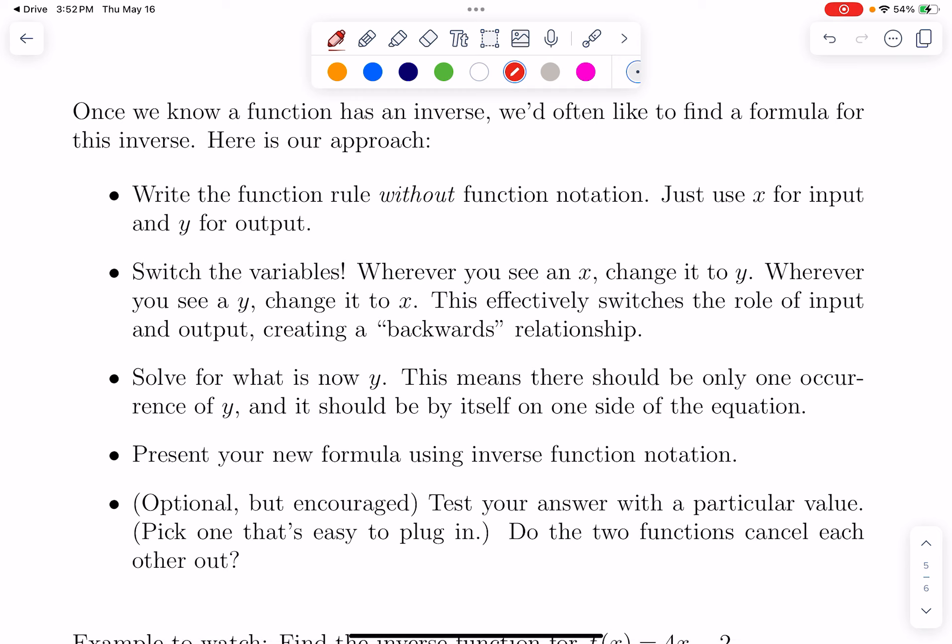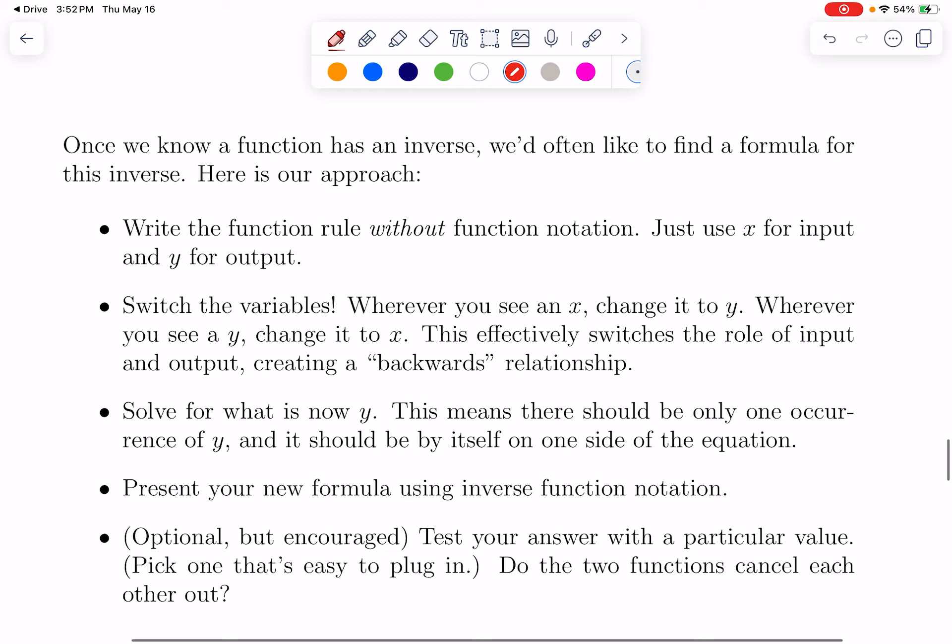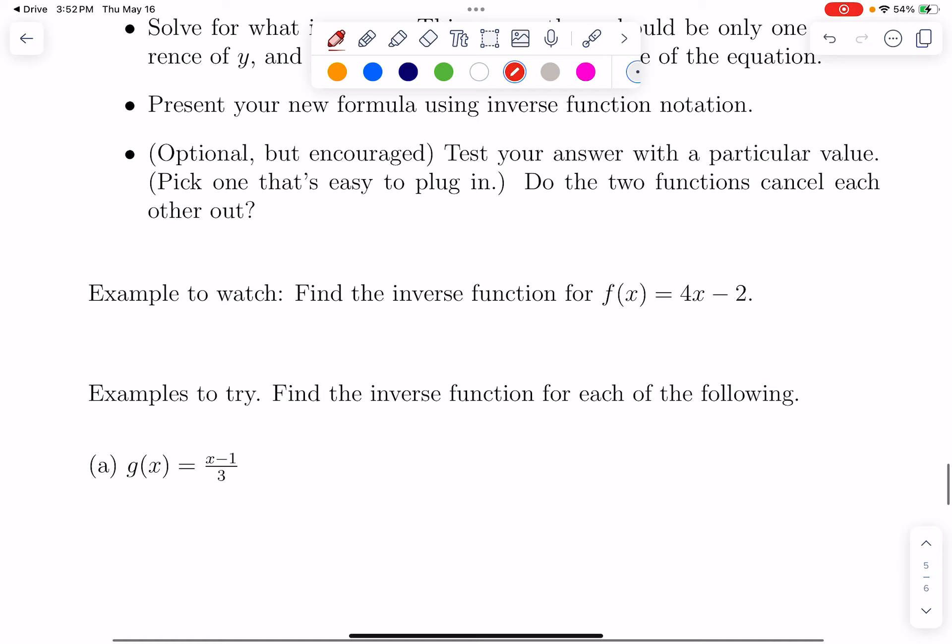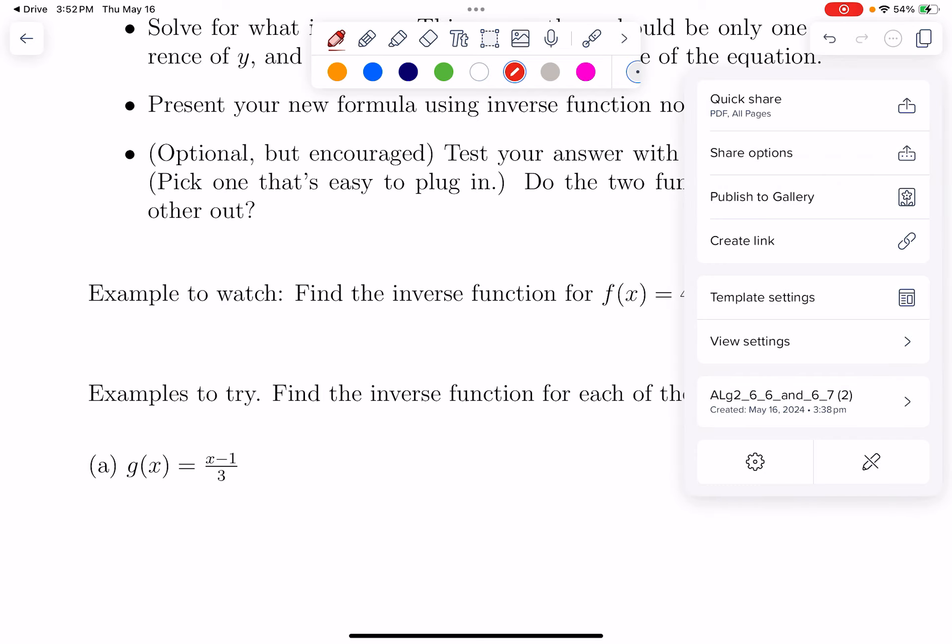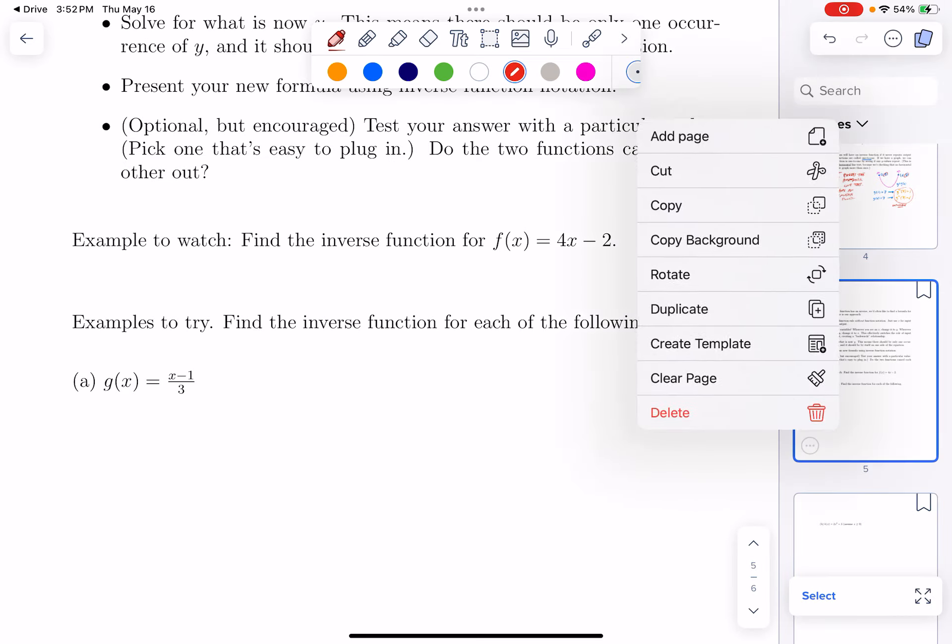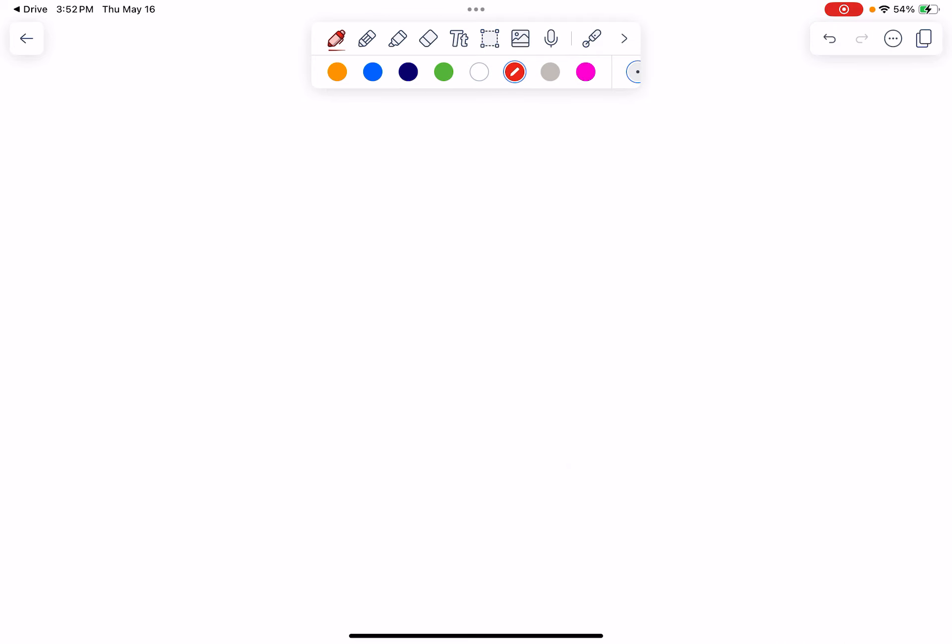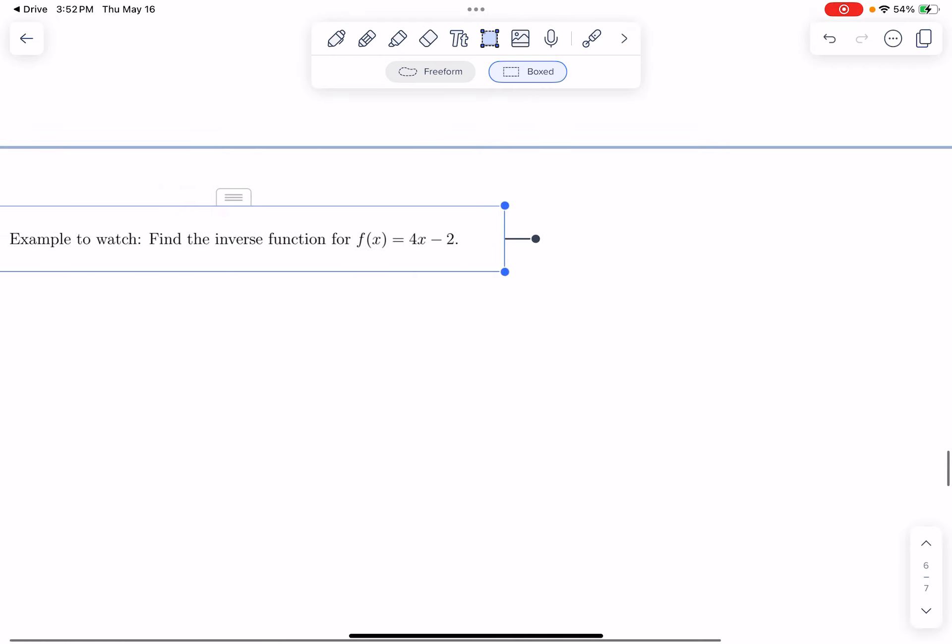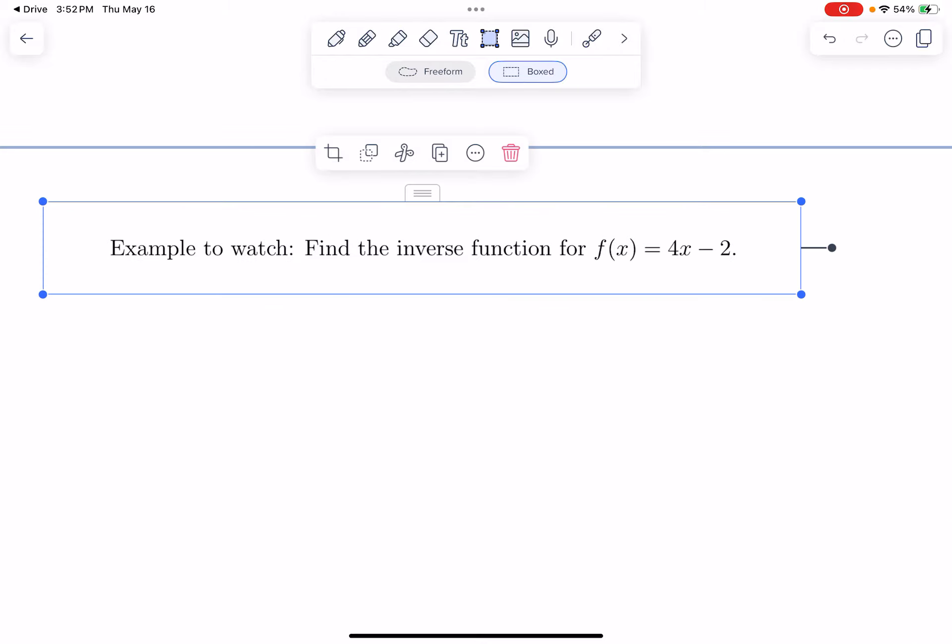Now, once we have a function that's 1 to 1 and has an inverse function, it would be nice if we could find a formula for that. Instead of just saying, oh yeah, this has an inverse function, let's figure out what it is. So, I will show you how to do this. I'm temporarily skipping those bullet points. And I will walk you through and then we will think about what that means and you can practice. So, I want to find the inverse function of this function f of x is 4x minus 2.